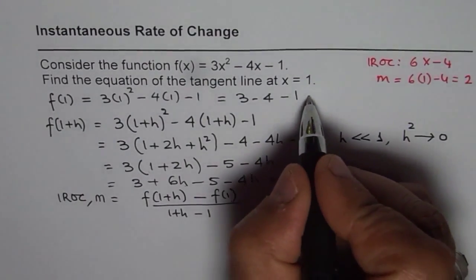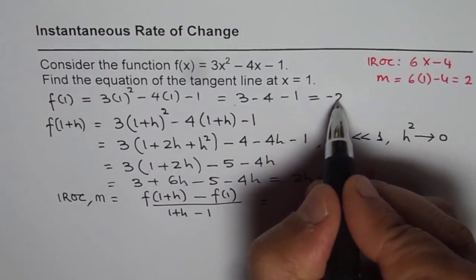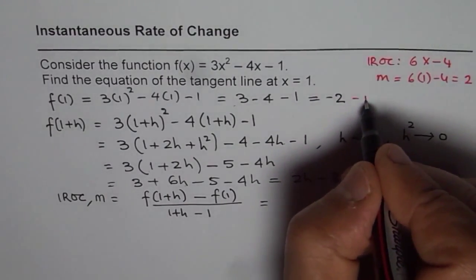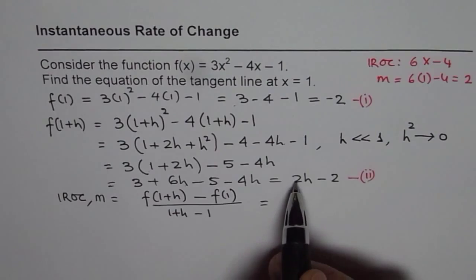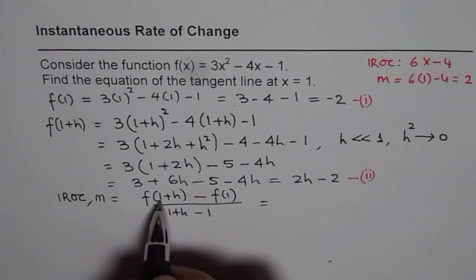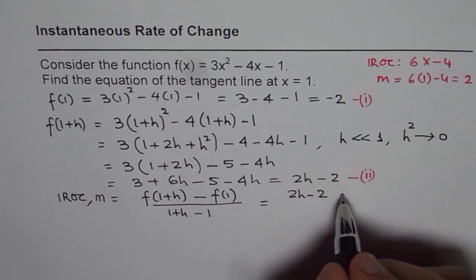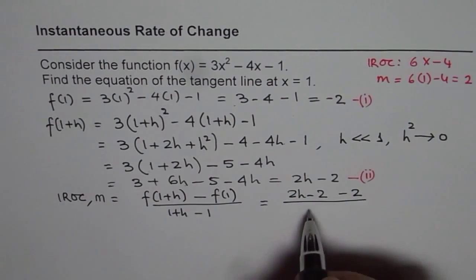What do we get here? 3 - 4 is -1, then we get -2. So that is f(1). Let's say equation 1. So let's substitute these values. We got 2h - 2 as f(1 + h), so we have 2h - 2 and -2 for there. So we get -2 divided by h.